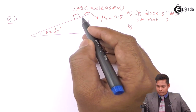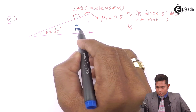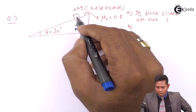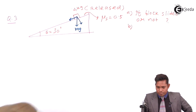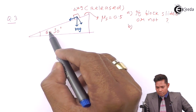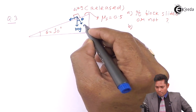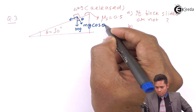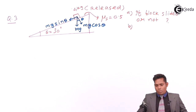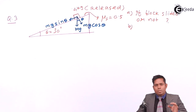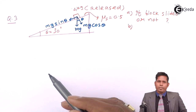Let us draw a free body diagram. This is the weight mg acting on this block. I resolve this force into two components: one along the inclined plane and another perpendicular to it. This angle is theta, which is 30 degrees, so I will take a general angle theta. So this component is mg cos theta and this component is mg sin theta. We have resolved the weight mg into two components — one along the inclined plane and another perpendicular to it.